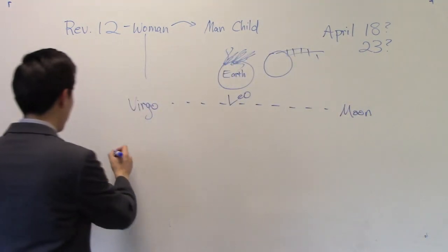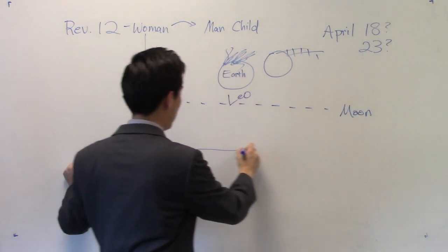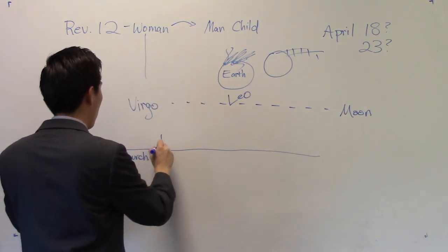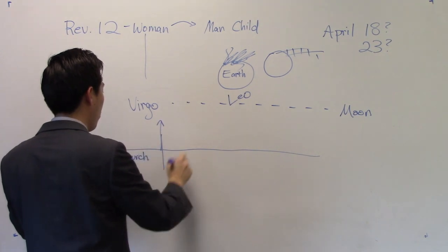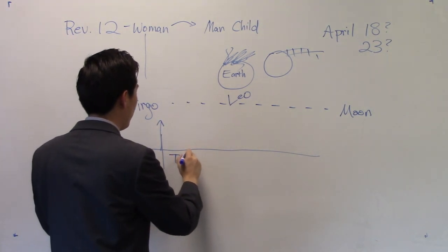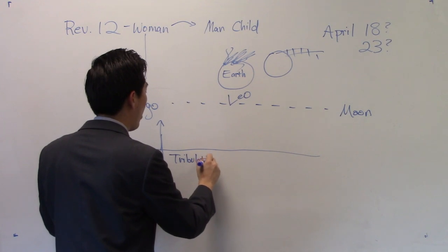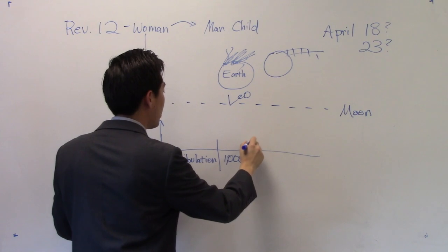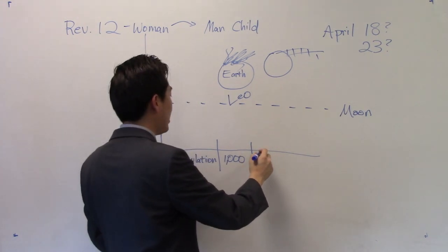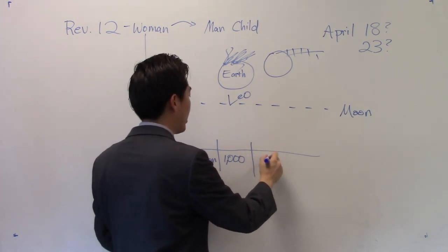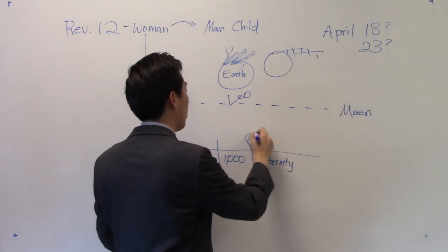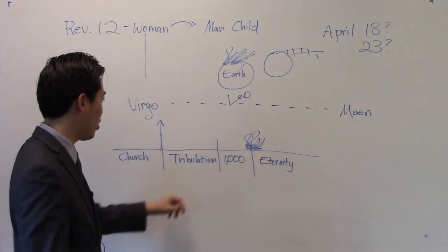So dispensationalism, we are Bible believing dispensationalism. So church age right here, rapture right here, see before the tribulation. Tribulation here, and then we got 1,000 year reign of Jesus Christ. And then after this 1,000 year reign, then he comes up with eternity. The great white throne judgment, and he destroys the world. It's right here, that he burns up the whole world, and the universe. It's right here, after the 1,000 years.